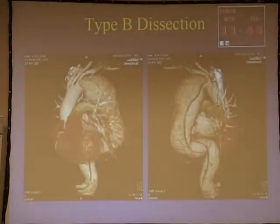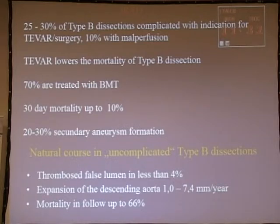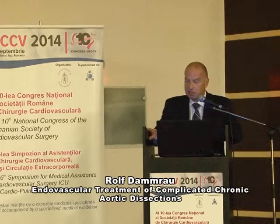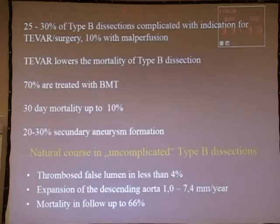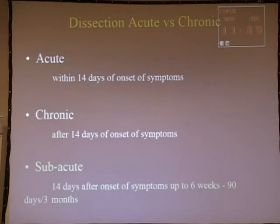Moving to chronic type B dissection: data from the IRAD registry show that TEVAR lowers mortality and is in the same range as best medical treatment. In the so-called uncomplicated group, we have thrombosis of the false lumen in only four percent, expansion of the descending aorta between one and seven millimeters per year, and high mortality in follow-up.